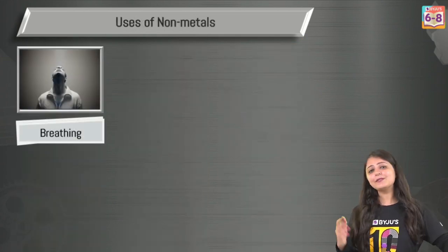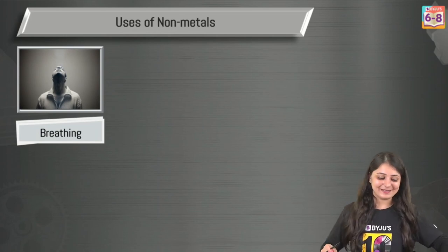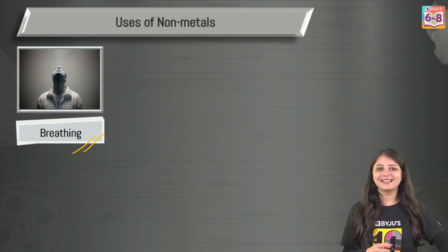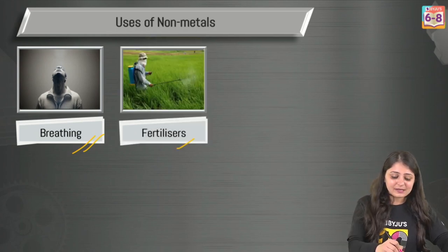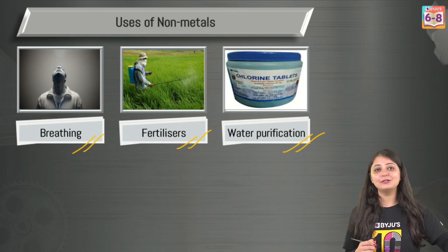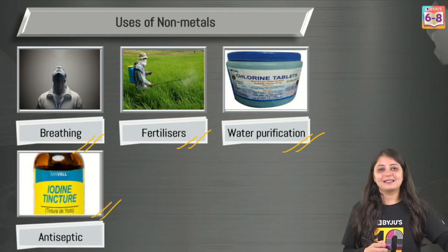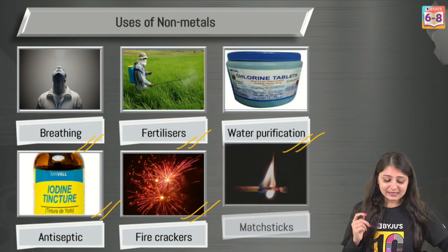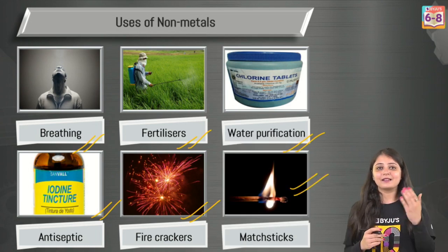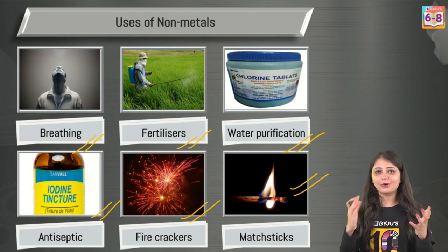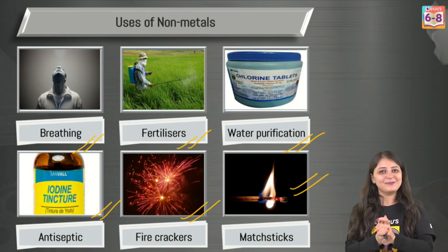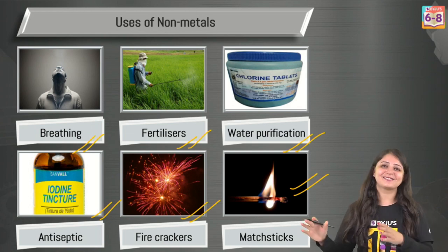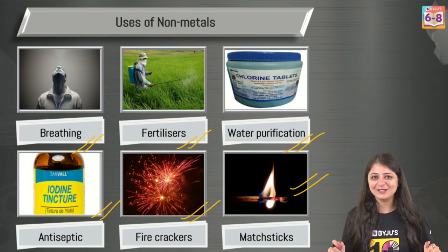Coming to non-metals — they are equally important. Oxygen is used for combustion and breathing. Nitrogen is used in fertilizers. Chlorine is used in water purification. Iodine is used in antiseptics. Sulphur is used to manufacture crackers. Phosphorus is used to make matchsticks. Hydrogen is used in rocket fuels. Carbon is used to make electrodes. And there are so many more non-metals around us — the list goes on.